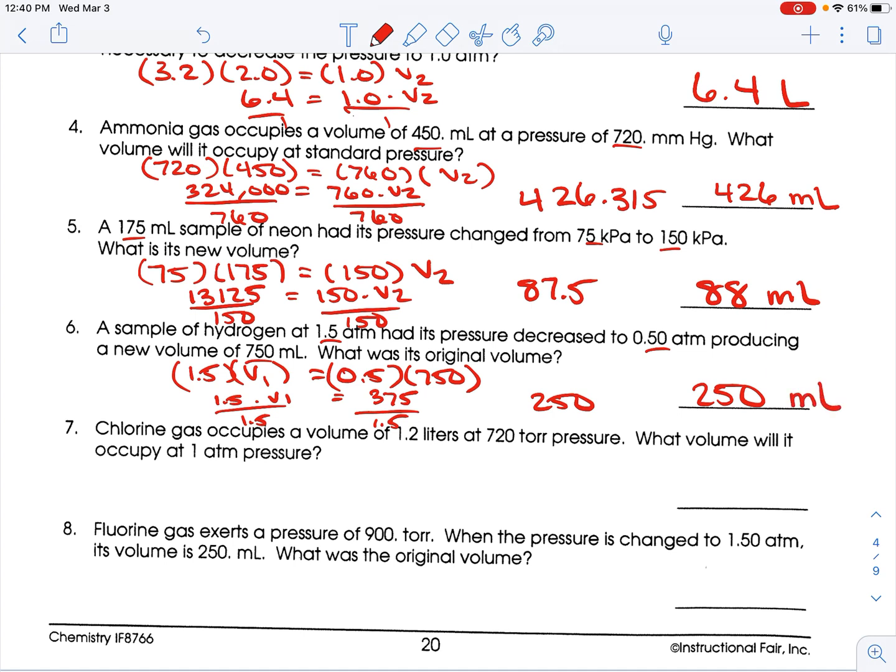Chlorine gas occupies a volume of 1.2 liters at 720 torr pressure. What volume will it occupy at 1 atmosphere? So, already I see a problem. I have 720 torr to start, but I have atmospheres to end. So, I'm going to need to change something. Now, 1 atmosphere is really nice, because I know that 1 atmosphere is 760 torr. So, I'll just, because that's standard, so I'll just go ahead and use that.